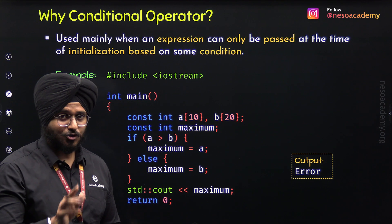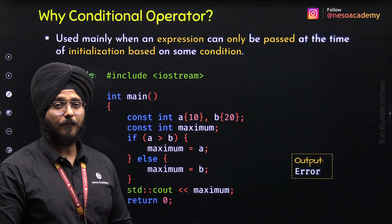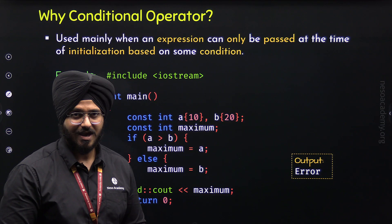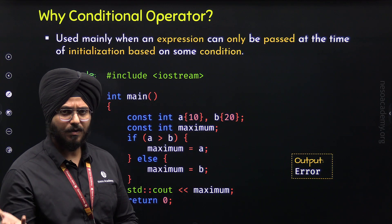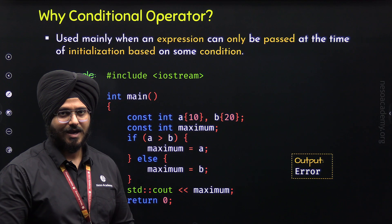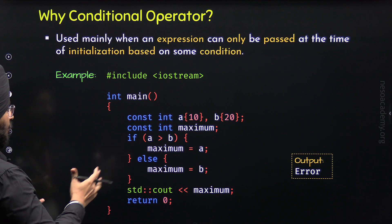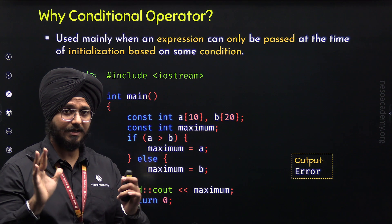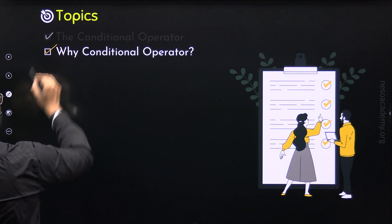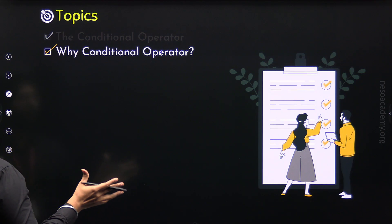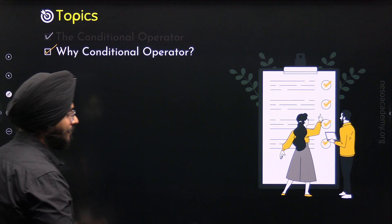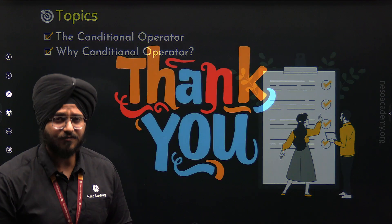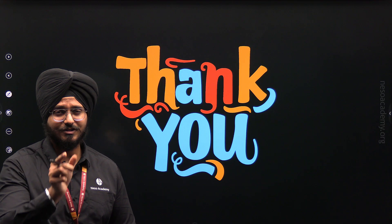I would also like to mention that the conditional operator is not a complete replacement for if-else. The conditional operator should be used in situations where we want to provide the result of simple expressions to a variable. When we have a block of code with multiple lines, if-else should be used. So with this, we are done with the second topic and we now know why and where we should use the conditional operator. This is it for now — thank you for watching, and I will see you in the next one.